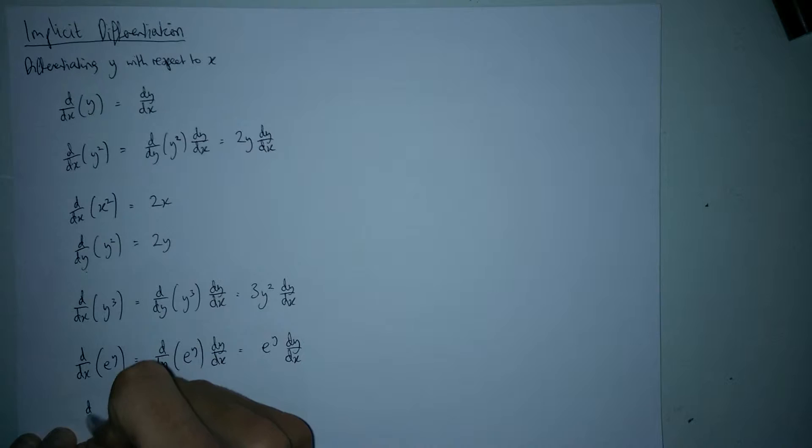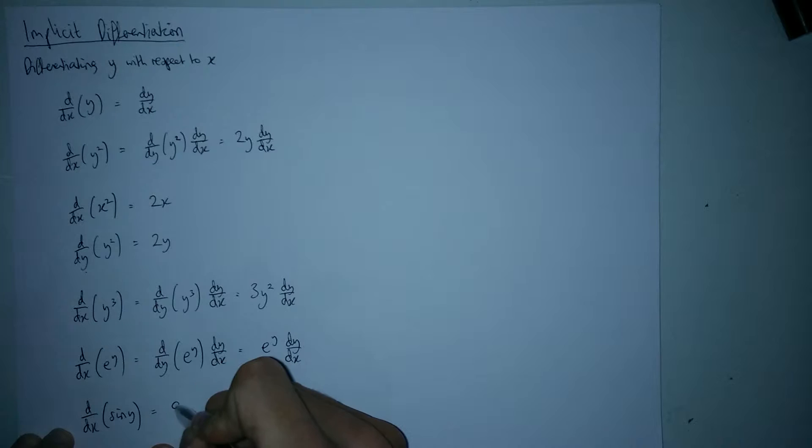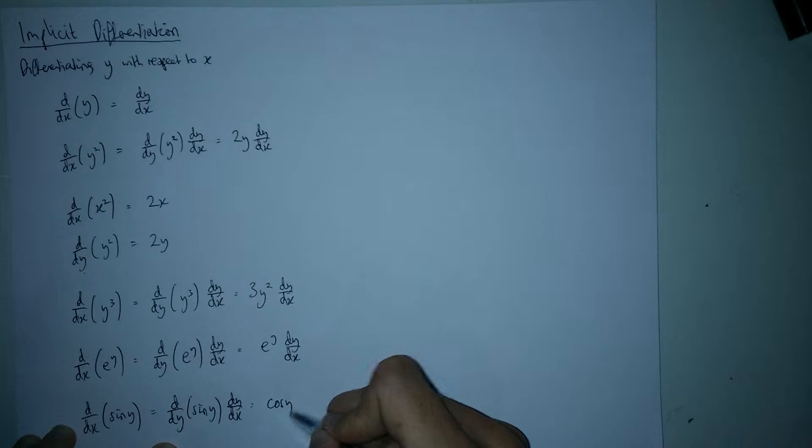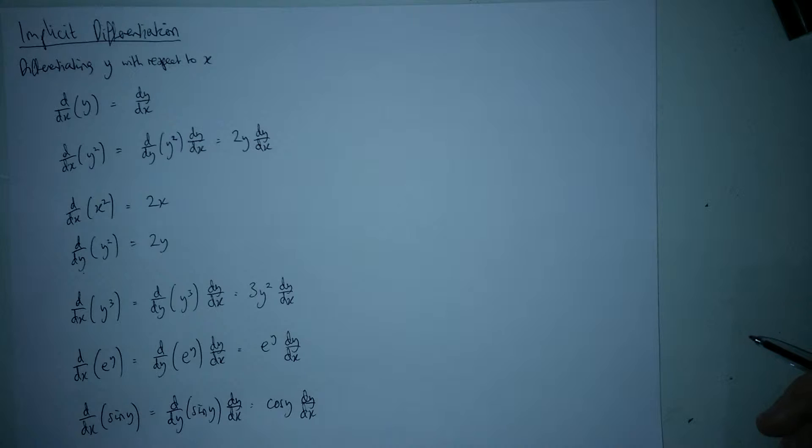And one last one. Let's differentiate sine y. Again, we change differentiate sine y to y. Stick back in the dy/dx to make it okay. And then differential of sine y is cos y. This dy/dx is times by that.